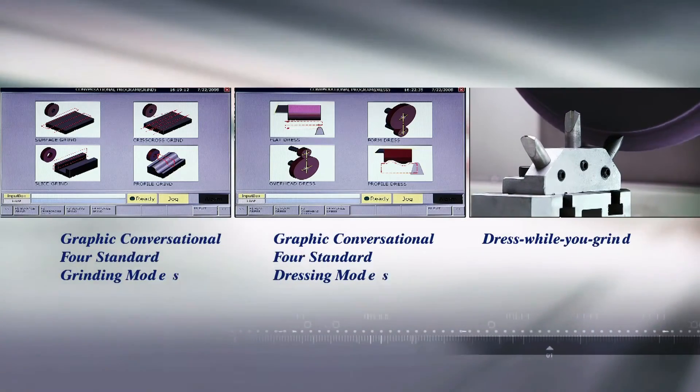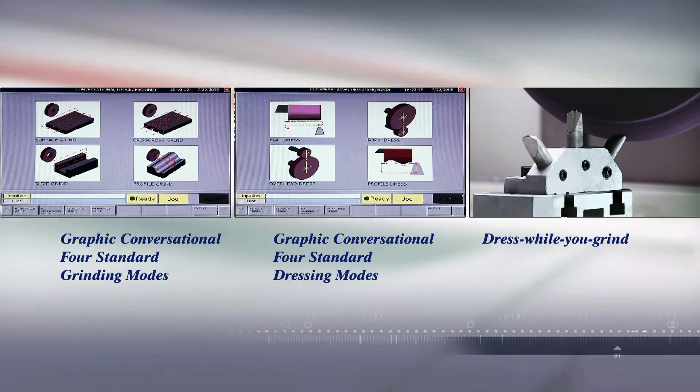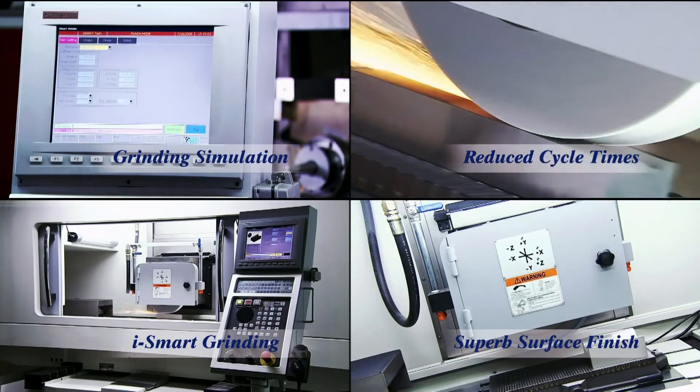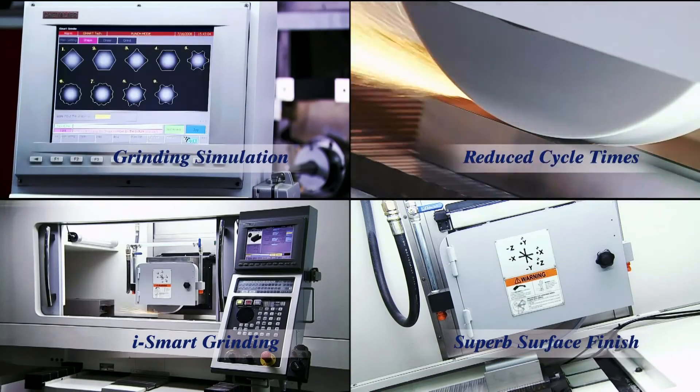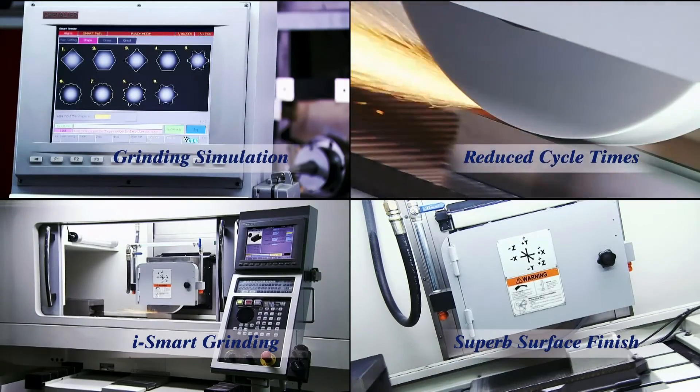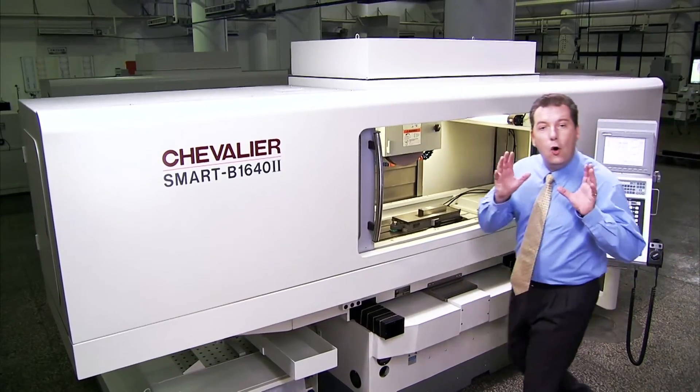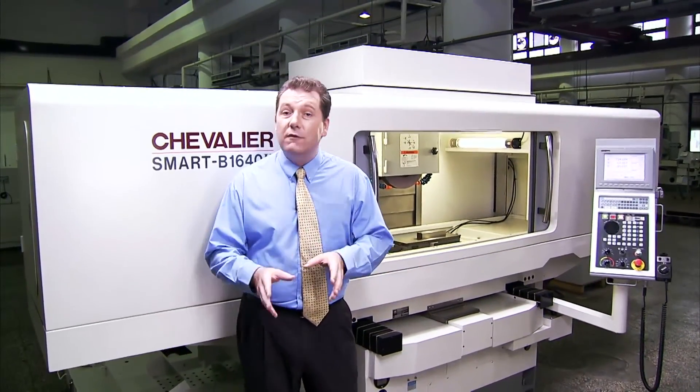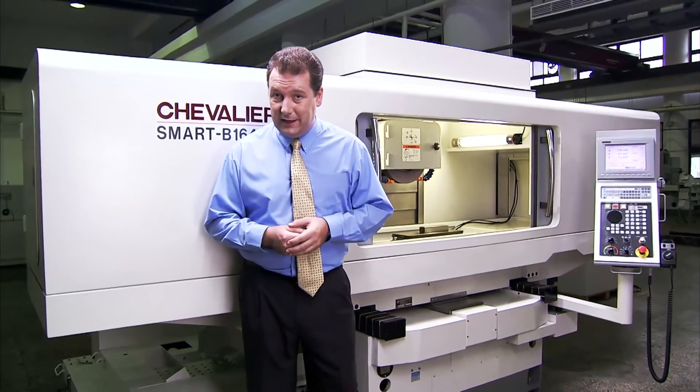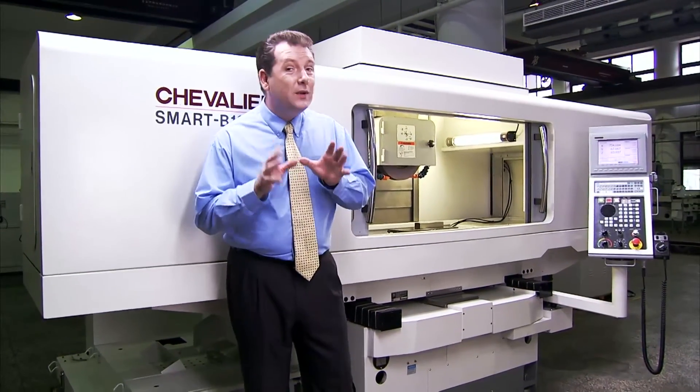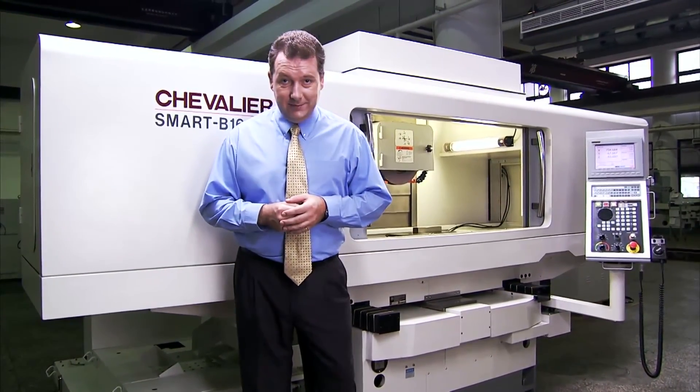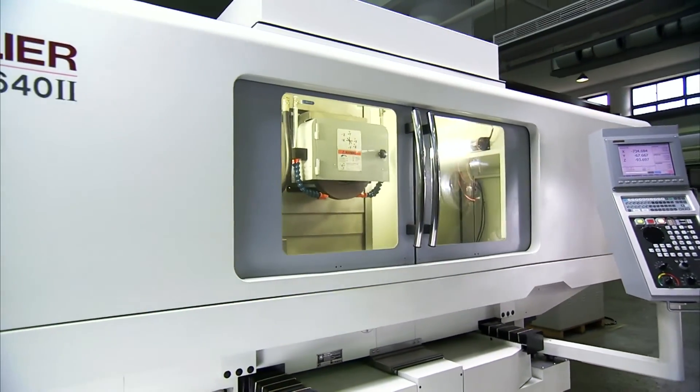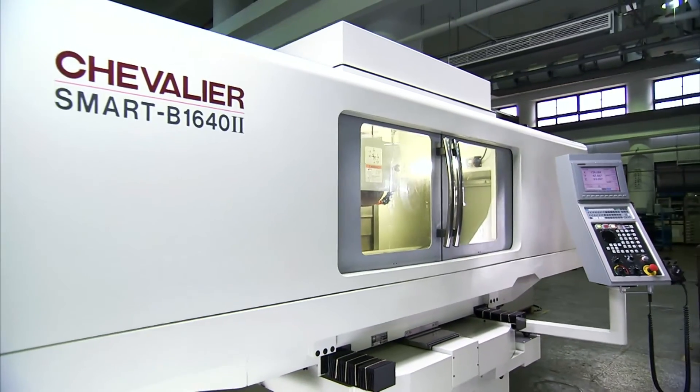The Smart B1642 grinder from Chevalier is a real grinding revolution. It has massive features to cover all of your key grinding operations. And all of this is available at a fraction of the cost of similar machines from European and Japanese manufacturers, but with even more features. This machine is one that you have to consider for multi-purpose grinding operations.